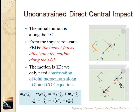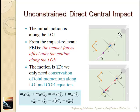For an unconstrained direct central impact, the velocities are parallel to the line of impact and so are the center masses. This gives 1D motion — all motion along the y-axis. The impact forces only affect that motion. To solve a problem like that, you conserve momentum in the y-direction and write the coefficient of restitution equation in the y-direction — two equations and two unknowns — and you can solve for the final velocities.